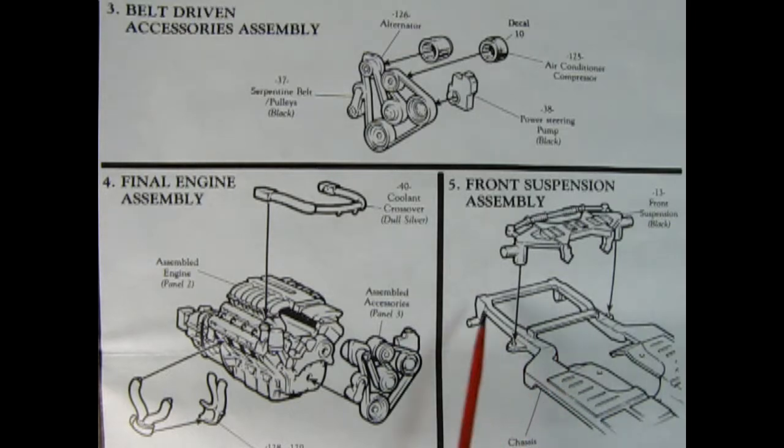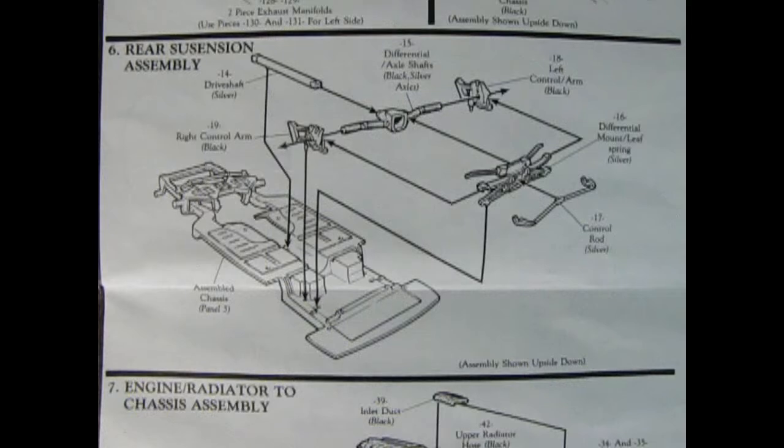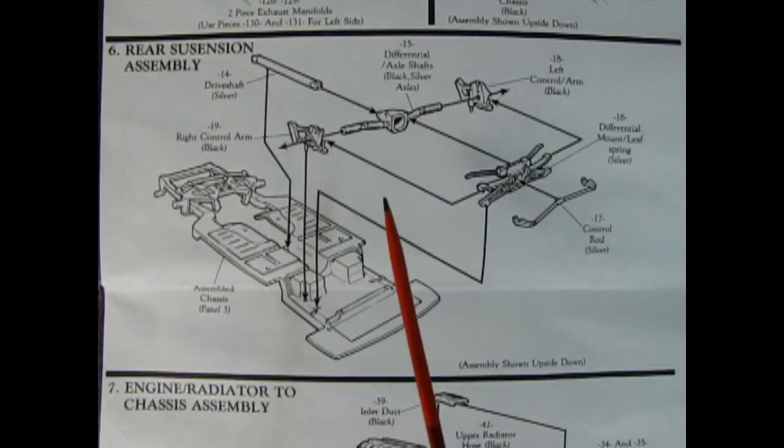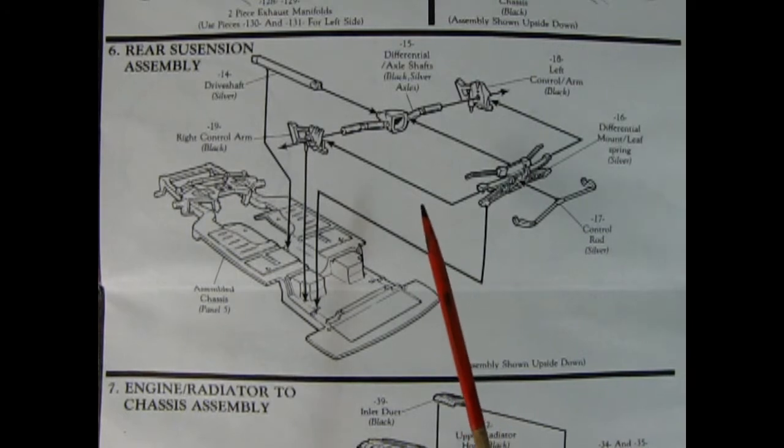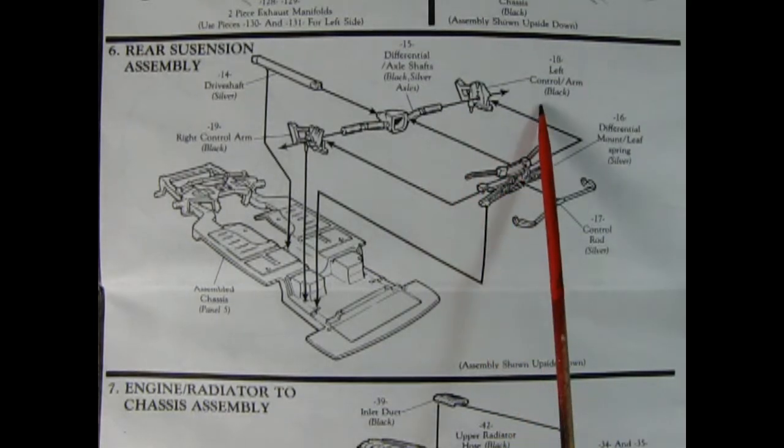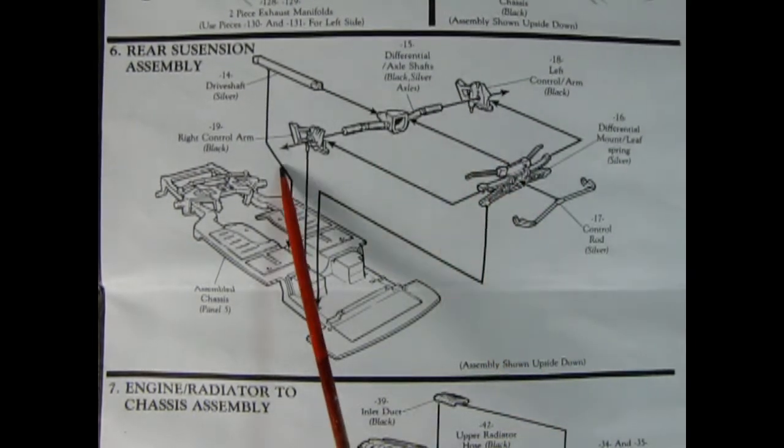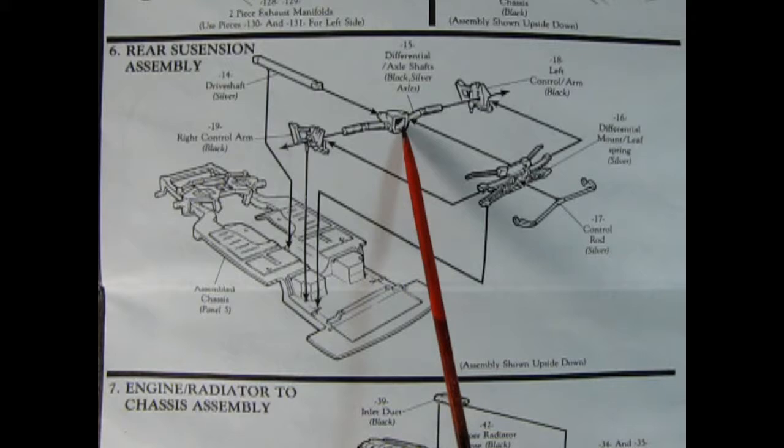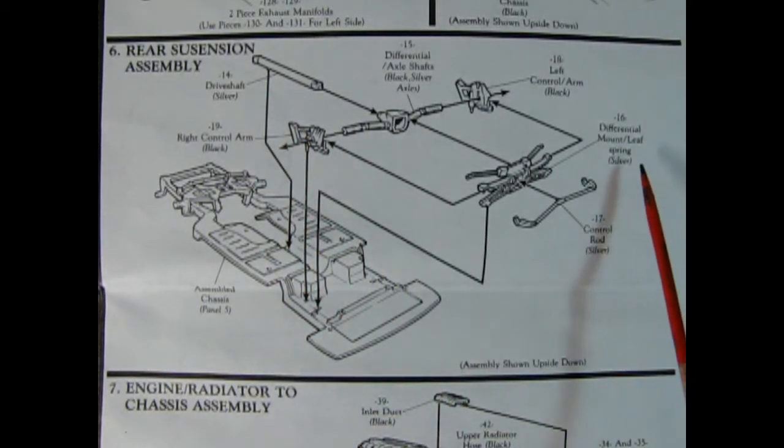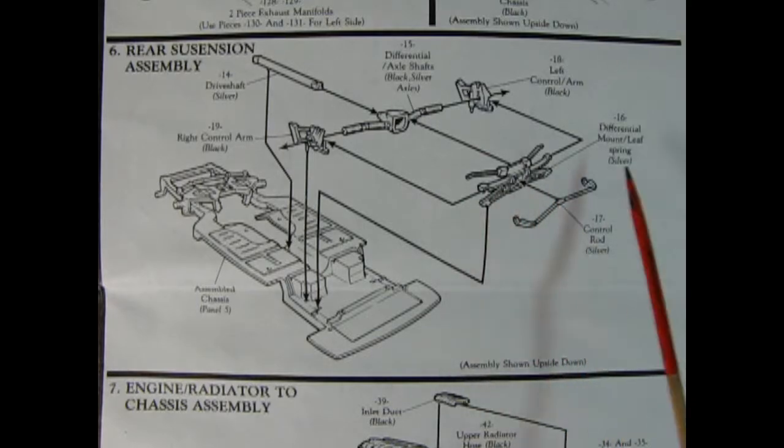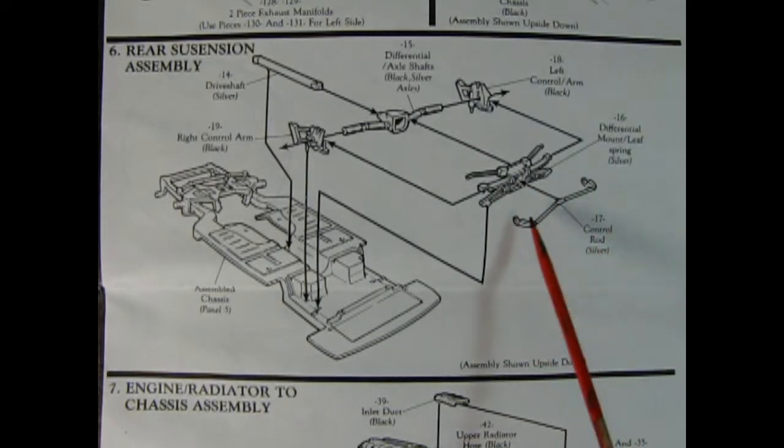Then here we've got our chassis pan and the front suspension which drops down into place. Here we get into the rear suspension assembly. Now this is pretty common among many of the AMT, Ertl, and MPC Corvettes because they're basically the same. Then we've got our left control arm and our right control arm. Then our differential in there. The drive shaft which will go up into the engine. The differential mount, leaf rear spring assembly, and our control rods right here. What's nice is they give you the paint colors underneath each of the parts.